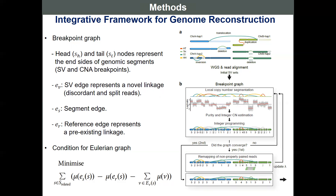There are three kinds of edges in the breakpoint graph. First, SV edges represent a novel linkage between genomic segments that we can discover from discordant or split reads. Second, segment edges represent genomic segments themselves, and multiplicity of segment edges is determined by read depth information. Third, reference edges represent a link between genomic segments that already exists in the reference genome.